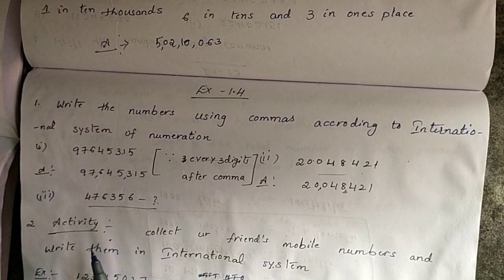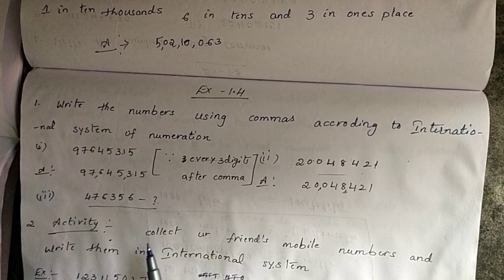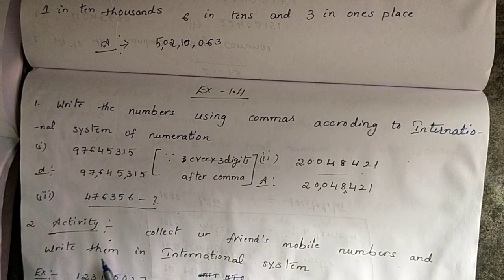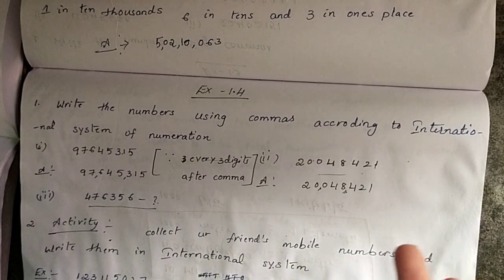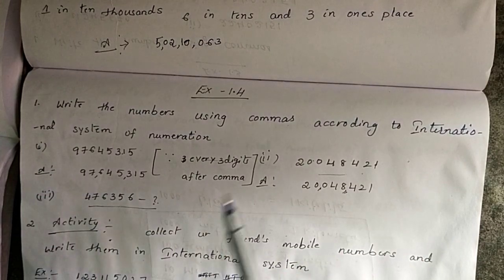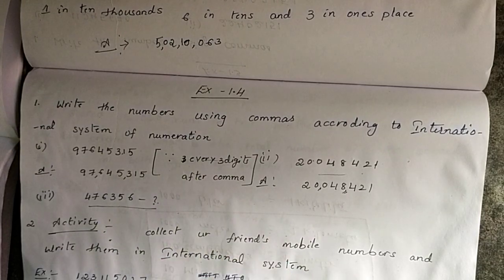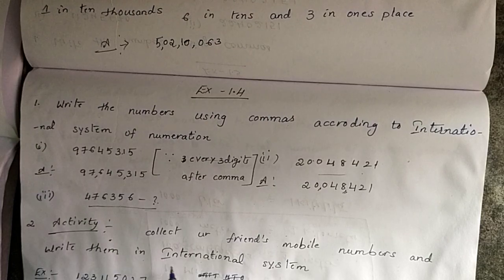Do one activity: collect your 5 friends' mobile numbers and write them in the international system. You already know how to write in the Indian system — now do the same in the international system as well.